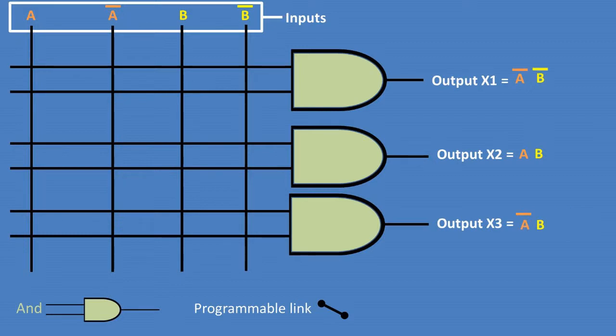Now let's draw an AND array that has the following outputs: Output X1 of NOT A AND NOT B, output X2 of A AND B, and output X3 of NOT A AND B.